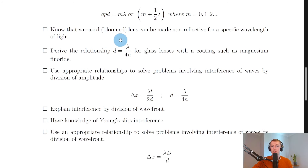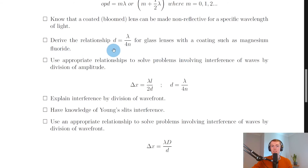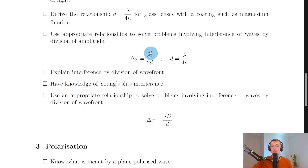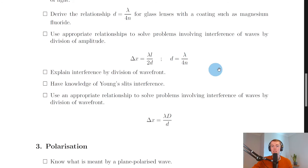You need to know that a coated or bloomed lens can be made non-reflective for a specific wavelength of light, and be able to derive the relationship d equals λ over 4n for glass lenses with a coating such as magnesium fluoride, where d is the thickness of the lens coating, λ is the wavelength of light, and n is the refractive index of the coating. For thin wedge interference, the equation is Δx equals λL over 2d, where Δx is fringe spacing, λ is wavelength, L is the length of the microscope slides, and d is the thickness of the object at one end of the air wedge.